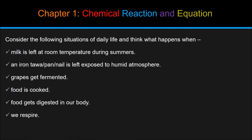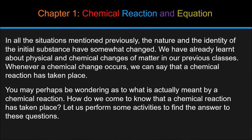Consider the following situations of daily life and think what happens when milk is left at room temperature during summers, an iron nail is left exposed to humid atmosphere, grapes get fermented, food is cooked, food gets digested in our body, we respire. In all the situations mentioned previously, the nature and identity of the initial substance have somewhat changed. We have already learned about physical and chemical changes of matter in our previous classes. Whenever a chemical change occurs, we can say that a chemical reaction has taken place. You may perhaps be wondering what is actually meant by a chemical reaction. How do we come to know that a chemical reaction has taken place? Let us perform some activities to find the answer to these questions.